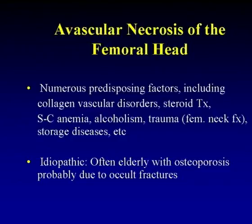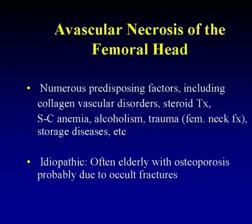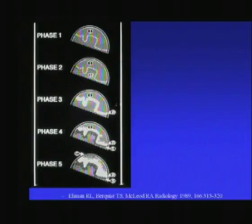Starting with avascular necrosis of the femoral head, there are numerous predisposing factors, including collagen vascular diseases, treatment with steroids — long-term or even short-term has been reported in the literature — sickle cell, alcoholism, trauma, fractures of the femoral neck. That's one of the complications of subcapital femoral neck fractures, storage diseases, and otherwise. The idiopathic form of avascular necrosis, mostly in the older literature, we know nowadays is probably a complication of occult fractures of the femoral head and neck in elderly osteoporotic individuals.